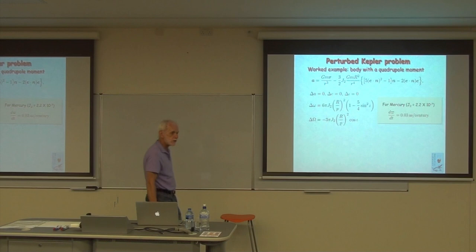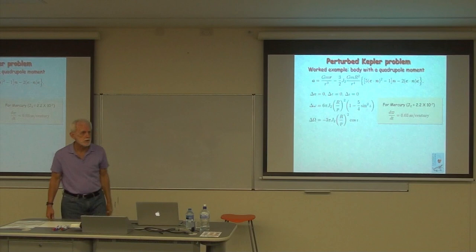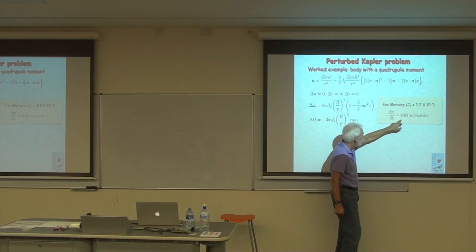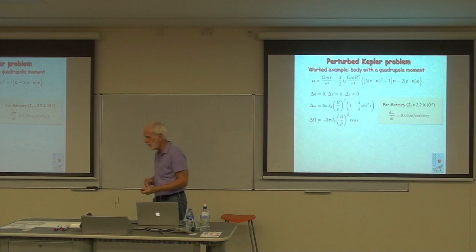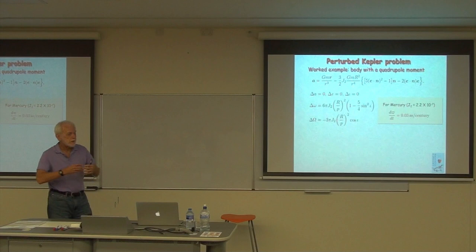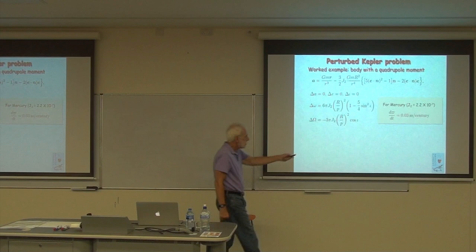It was very difficult to measure the quadrupole moment by these optical means. Other people tried, including Henry Hill, and got varying results. Over time, the observations went against such a very large quadrupole moment. Eventually the solution came from a completely different direction — the field of helioseismology.